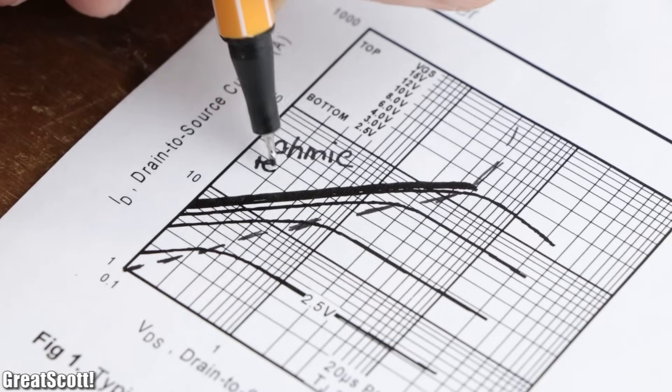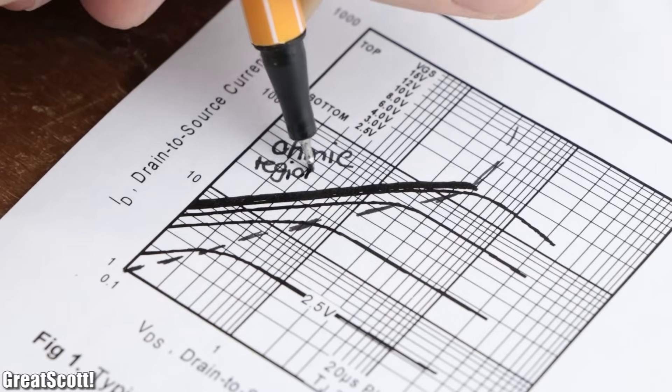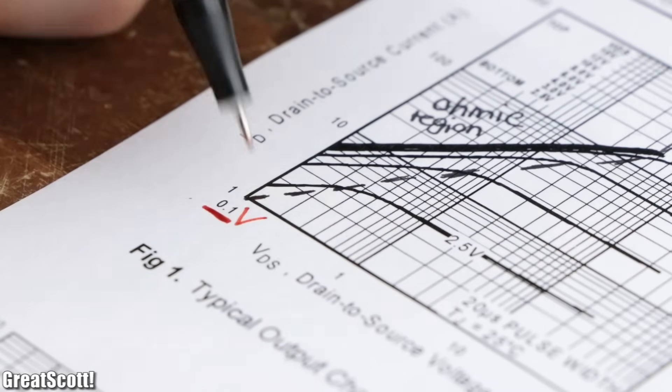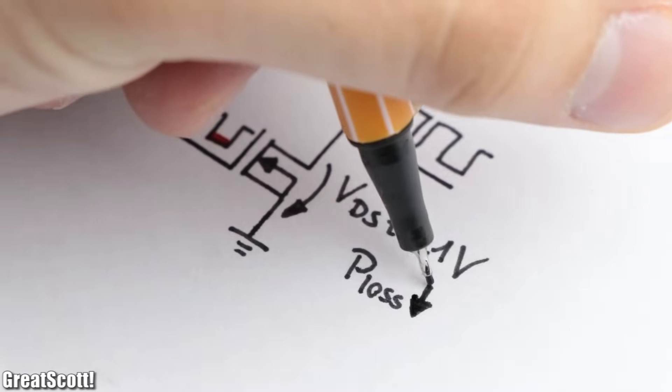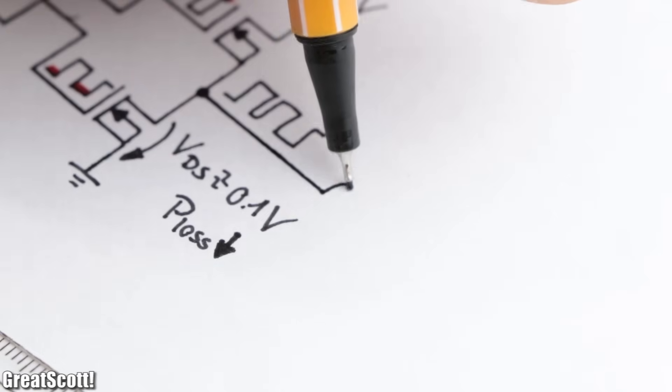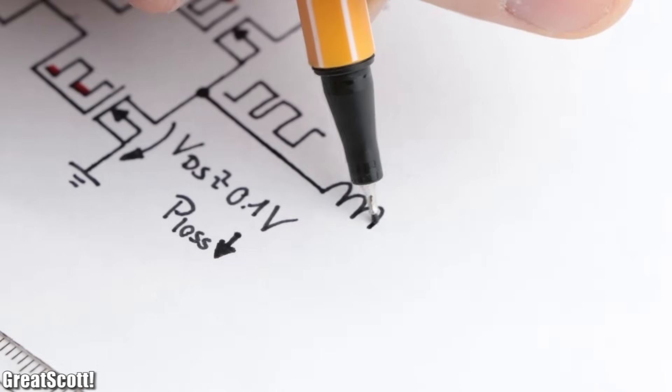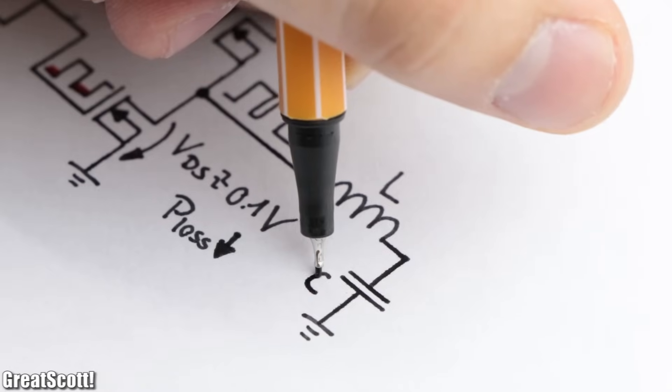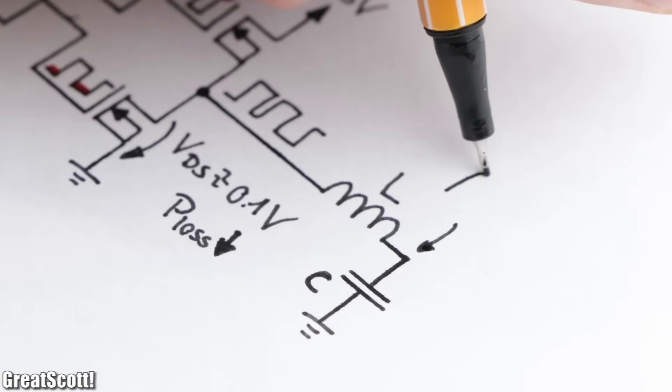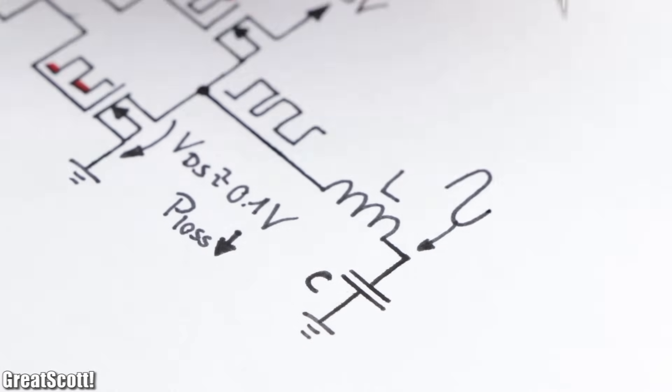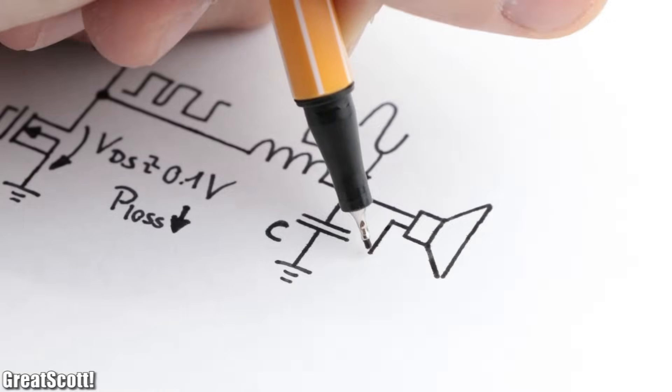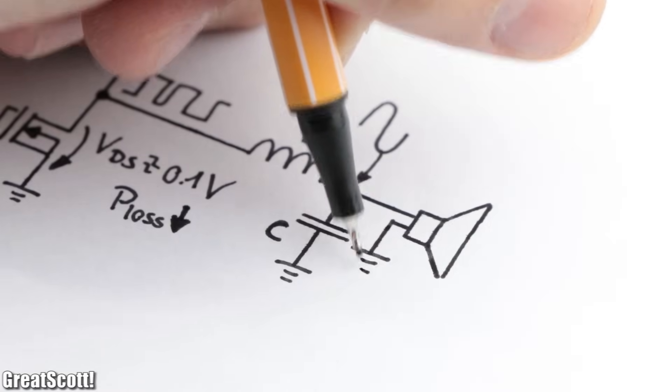Since the MOSFETs were switched on and off in their ohmic region with a low drain to source voltage drop, very little power losses are created. Now we can recreate the original audio signal by adding an LC low-pass filter. Which, like the name implies, filters out all the high frequencies and leaves us with our original, now amplified audio signal.